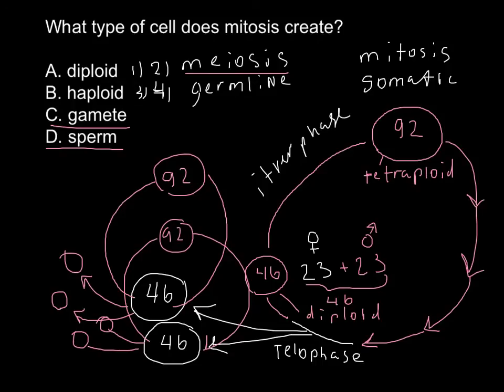So hopefully now you're able to answer this question that we started with. We start with a diploid number, or diploid cell, and we end the process of mitosis with two diploid cells. So the correct answer would be A.